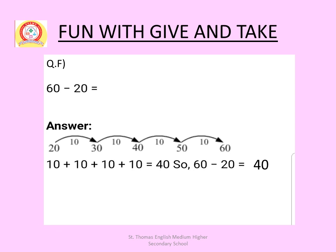Next: 60 minus 20. Start forward counting from 20 to 60. From 20 to 30 in 10 steps, 30 to 40 in 10 steps, 40 to 50 in 10 steps, 50 to 60 in 10 steps. So 10 plus 10 plus 10 plus 10 equals 40. Therefore 60 minus 20 equals 40.